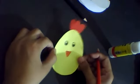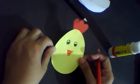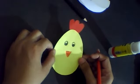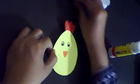What is this? Can you tell me? A chick. We are making a chick. Which shape is it? It is an oval shape. Right.